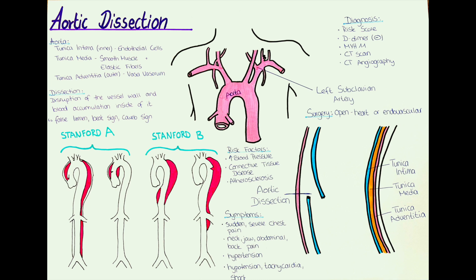How can we classify an aortic dissection? In clinical practice the Stanford classification is mostly used. We divide dissections into type A and type B. A type A aortic dissection starts in every aspect of the aorta proximally to the left subclavian artery, while in a type B aortic dissection it starts distally to the left subclavian artery. The type A aortic dissection is connected to a higher rate of mortality than the type B dissection.